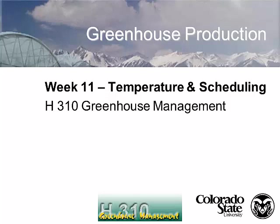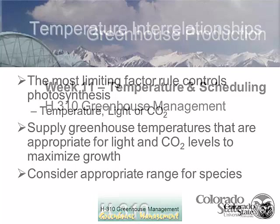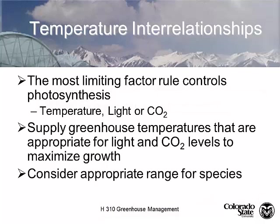Earlier in the semester we talked about how to heat and cool your greenhouse. Now I want to talk about managing temperature and how we can manage plant growth with it. The most limiting factor controlling photosynthesis is going to be temperature, light, or carbon dioxide. You need to think about the greenhouse temperatures that are appropriate for the light and CO2 levels to maximize plant growth.